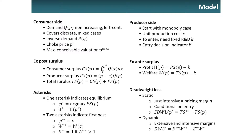Regarding the asterisks: one asterisk is the equilibrium value and two asterisks is the socially optimal value. There are two concepts of deadweight loss. Static deadweight loss is just the Harberger triangle: first-best total ex-post surplus minus the surplus from equilibrium. Dynamic deadweight loss — DWL star — includes the first-best entry decision. If there's no entry in equilibrium but there is entry in the first best, then dynamic deadweight loss equals first-best surplus.